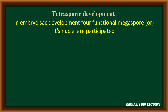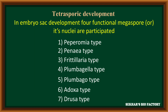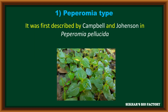This tetrasporic embryo sac development has different types. Let us discuss the first type of tetrasporic embryo sac development, that is the Peperomia type. The Peperomia type of embryo sac development was first described by Campbell and Johansson in one of the plants, Peperomia pellucida.